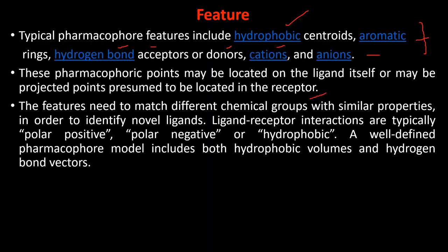The features need to match different chemical groups with similar properties in order to identify novel ligands. Ligand-receptor interactions are typically polar positive, polar negative, or hydrophobic. A well-defined pharmacophore model includes both hydrophobic volumes and hydrogen bond vectors.